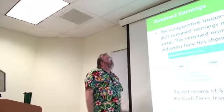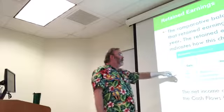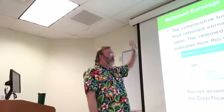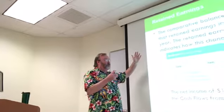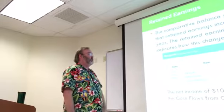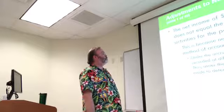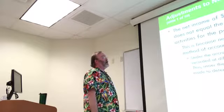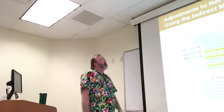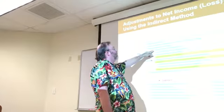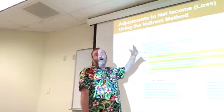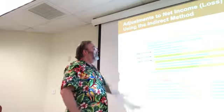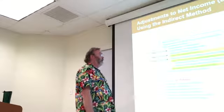Retained earnings shows an increase of $80,000 during the year. Net income was $108,000 and cash dividends were $28,000, so you can reconcile the increase in retained earnings to back into how much the cash dividend was. Net income of $108,000 is not the cash flows from operating activities because you make a series of adjustments: depreciation of fixed assets, any amortization of intangibles, any gains and losses on the sale of assets, and then changes in operating assets and liabilities.